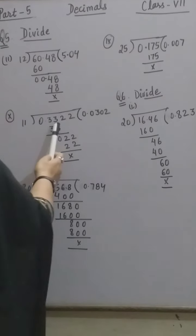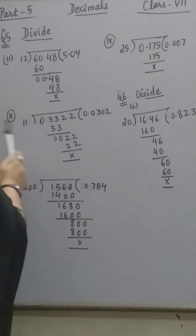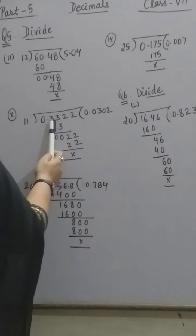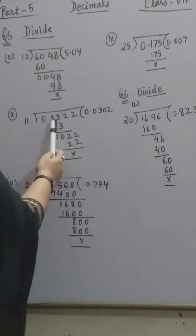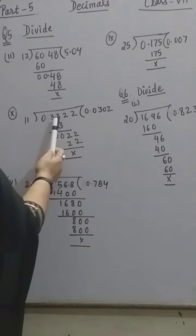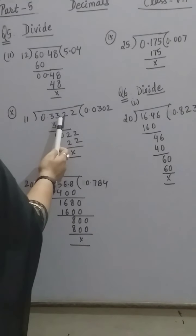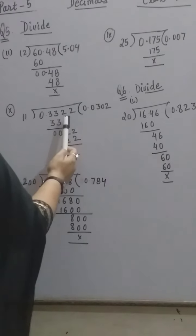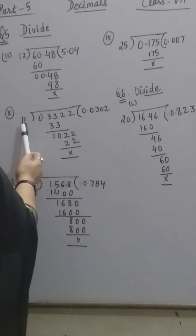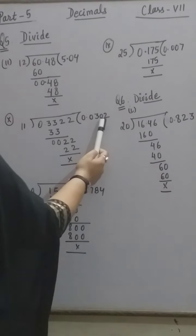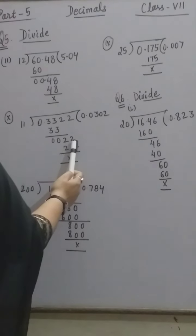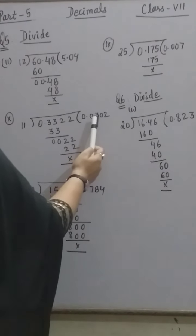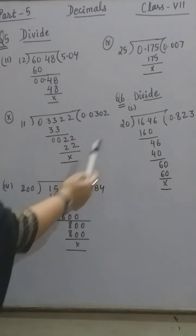10th part: we have to divide 0.3322 by 11. First we look at the 10th place. 3 is less than 11, so we place 0. Now we read the table for 33: 11 threes are 33. We copy down 2; 2 is less than 11, so we place 0 again. Now we read the table for 22: 11 twos are 22. So our answer is 0.0302.